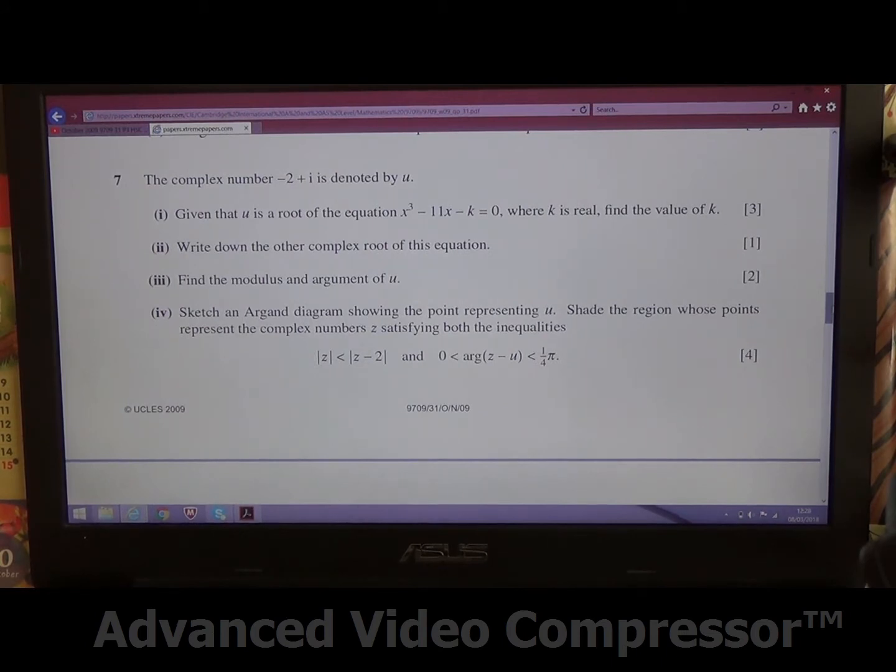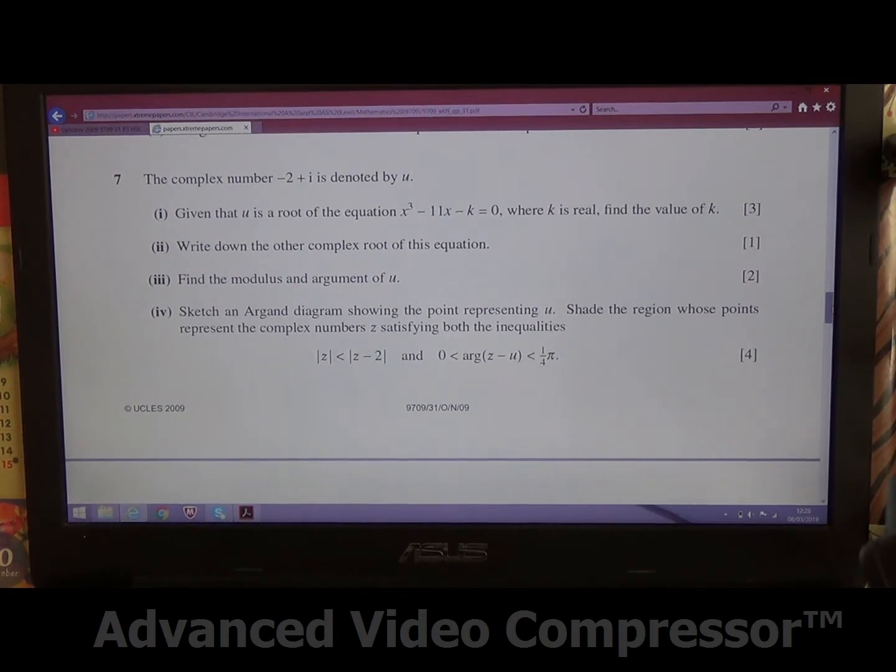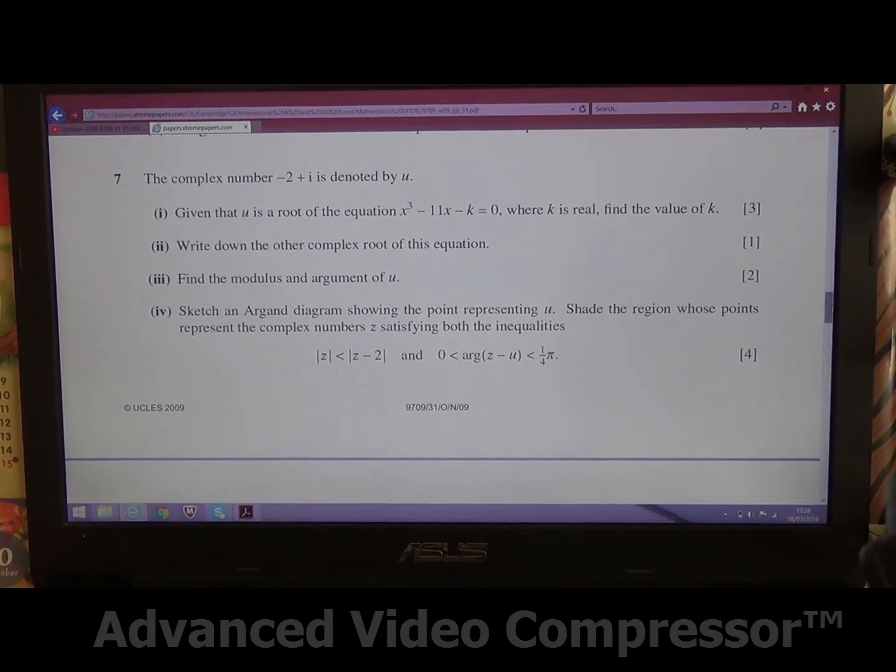Second part, write down the other complex root of this equation. Third part, find the modulus and argument of u. Fourth part, sketch an Argand diagram showing the point representing u. Now shade the region whose points represent the complex numbers z satisfying both inequalities: mod of z being less than mod of z minus 2, and 0 less than the arg of z minus u less than quarter pi.